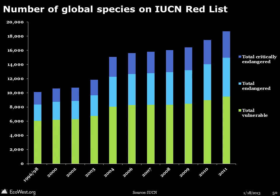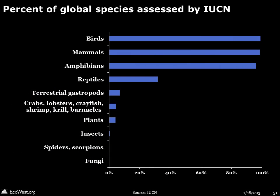The number of species on the IUCN's red list of threatened species has increased from about 10,000 in the mid-1990s to nearly 20,000 today, with many of the new additions classified as critically endangered. It's important to note that IUCN assessments have focused on certain types of species. The IUCN has classified virtually all birds, mammals, and amphibians. But with many other taxa, including the insects and plants that make up the lion's share of species, the IUCN has assessed hardly any of them.